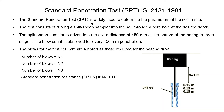The standard penetration test is widely used to determine the parameters of the soil in situ. The test consists of driving a split spoon sampler into the soil through a borehole at the desired depth with the help of a hammer of weight 63.5 kg.